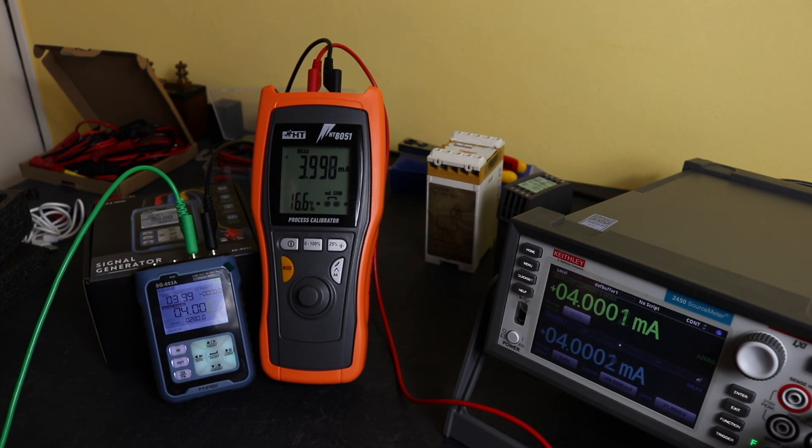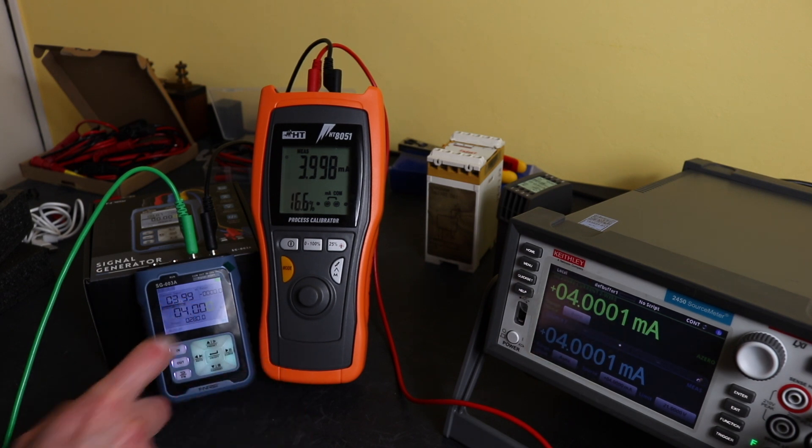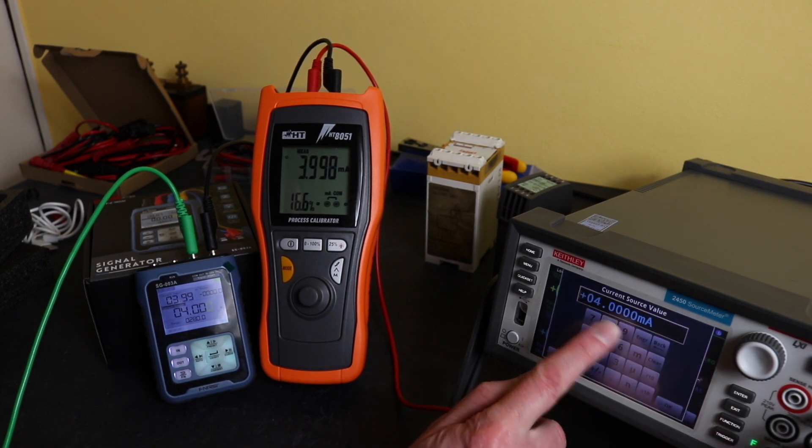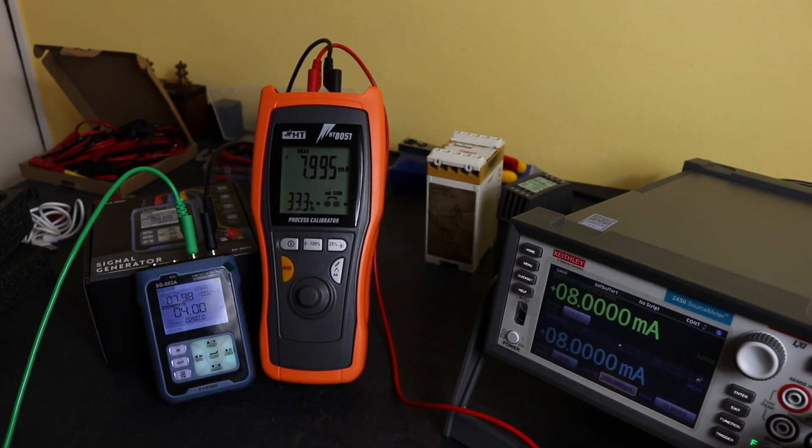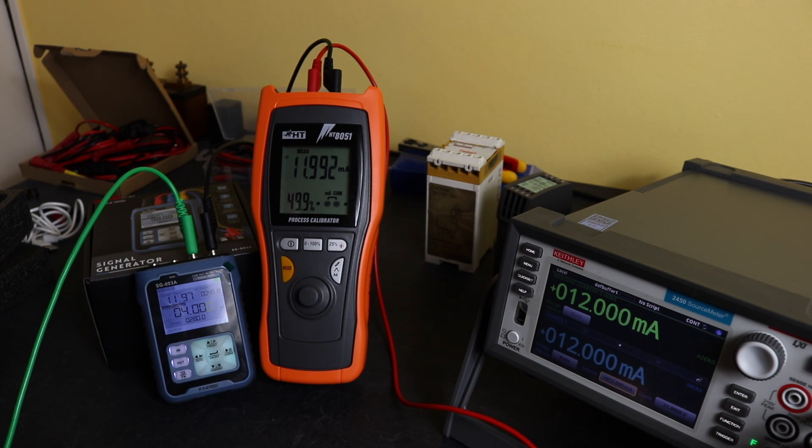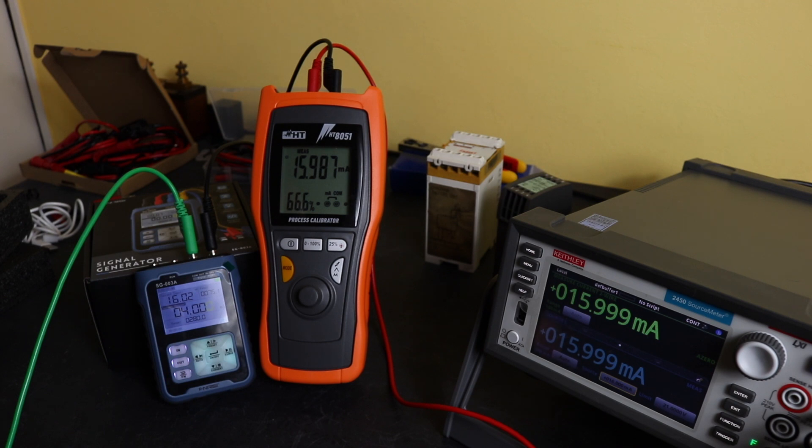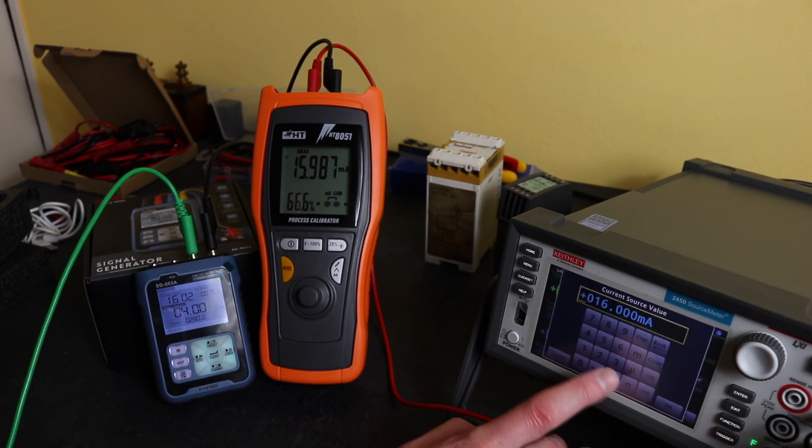So we're all set up to test the measurement capability of these two instruments. We're on 4 to 20 milliamp loop and we're putting in 4.001, 3.998 on the HT8051, and 3.99 on the SG003A. Notice we've got an extra decimal point on the HT8051 that's missing off of the SG003A. Let's go up to 8.99 amps, 7.95, 7.98. Let's go up to 12: 11.97, 11.99.